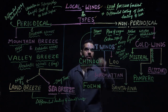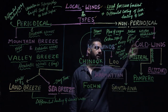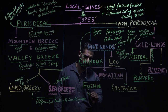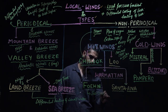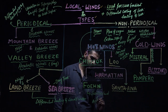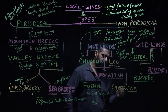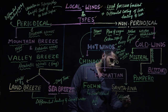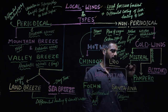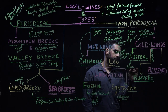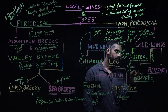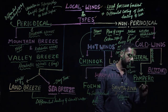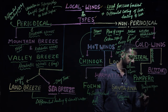Similarly, we have Fohan — we discuss its name, place of origin, nature, and weather modifications. Fohan blows in Switzerland in the Alps mountains. Santana blows in California and is a hot and dry wind. Mistral is a cold wind that blows in Spain and France. Pampero blows in the Pampas region of Argentina in South America.